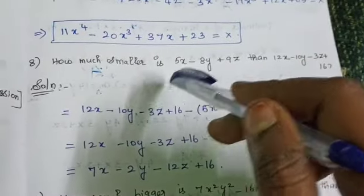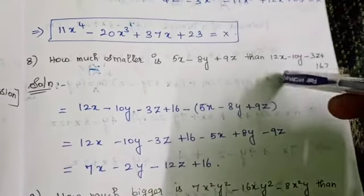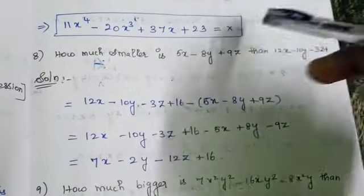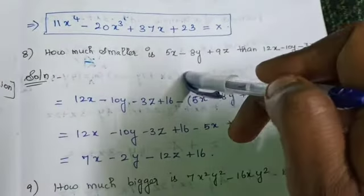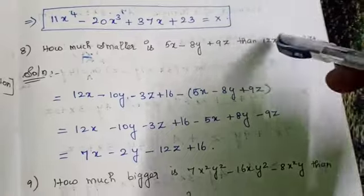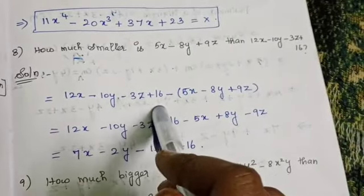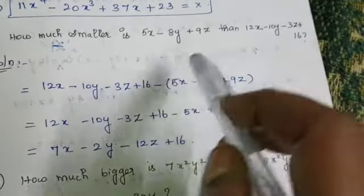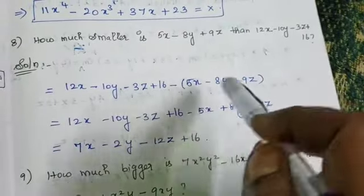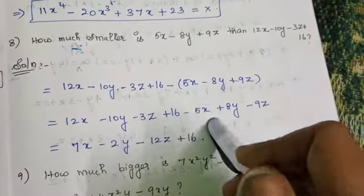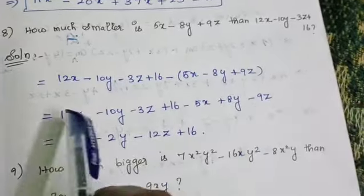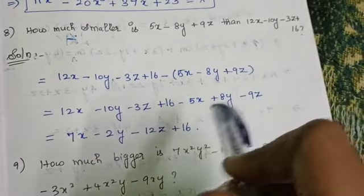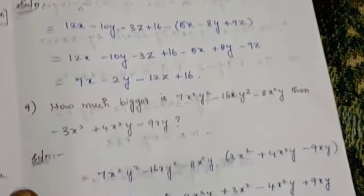Eighth sum: How much smaller is 5x minus 8y plus 9z than 12x minus 10y minus 3z plus 16? The bigger expression is 12x minus 10y minus 3z plus 16. We subtract 5x minus 8y plus 9z from it. Taking the minus inside the bracket: 12x minus 10y minus 3z plus 16 minus 5x plus 8y minus 9z. Combining: 12 minus 5 gives 7x; minus 10 plus 8 gives minus 2y; minus 3 minus 9 gives minus 12z; constant is plus 16.